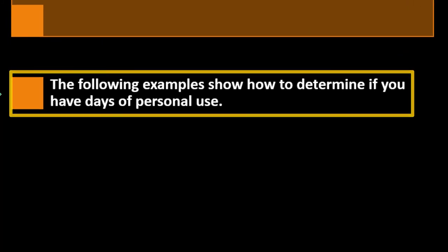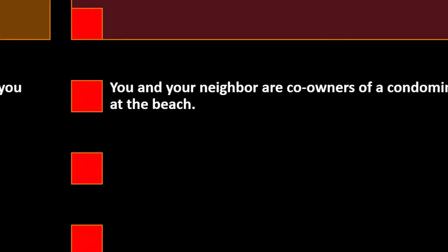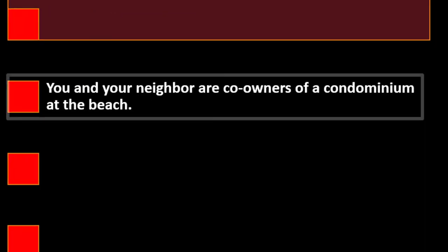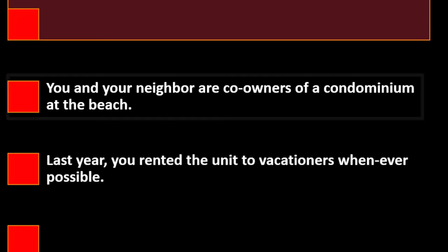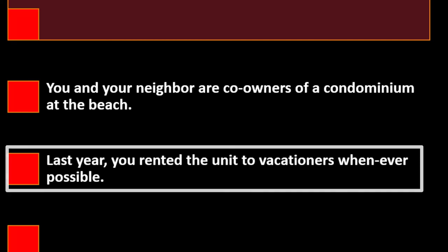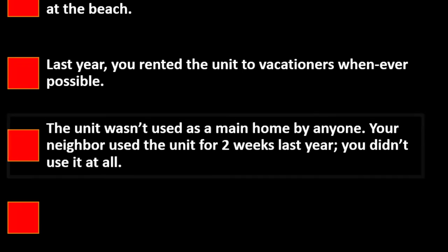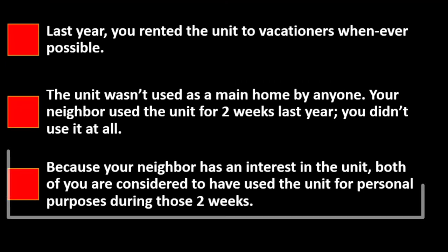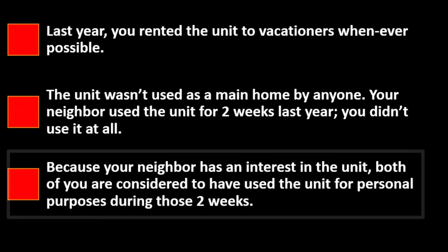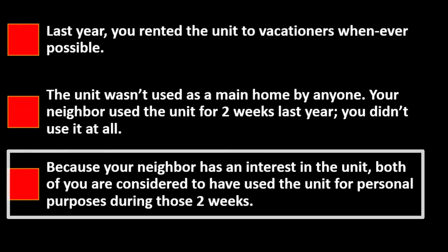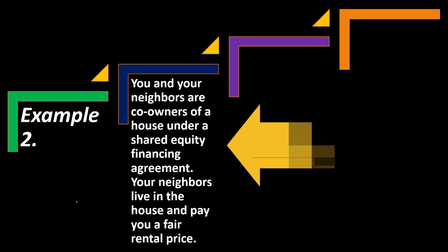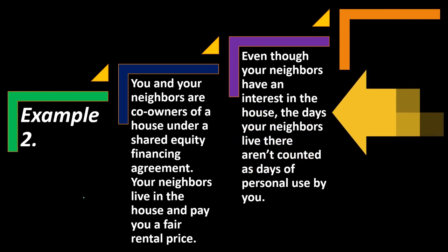The following examples show how to determine days of personal use. Example 1: you and your neighbor are co-owners of a condominium at the beach. Last year you rented the unit to vacationers whenever possible; the unit wasn't used as a main home by anyone. Your neighbor used the unit for two weeks. You didn't use it at all. Because your neighbor has an interest in the unit, both of you are considered to have used the unit for personal purposes during those two weeks.